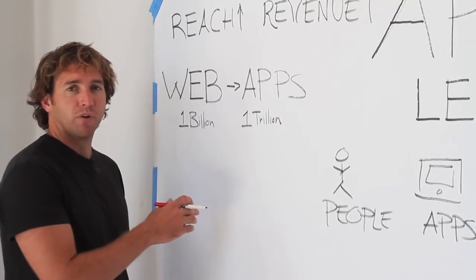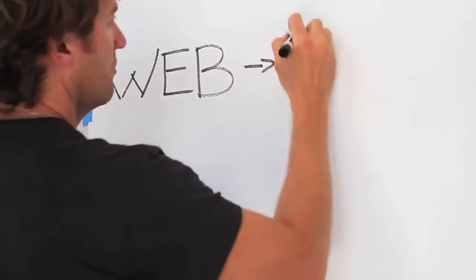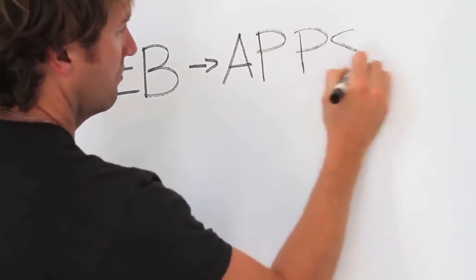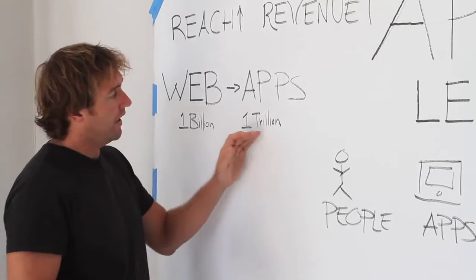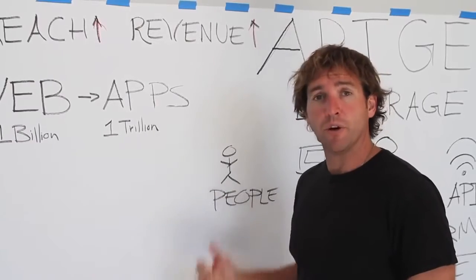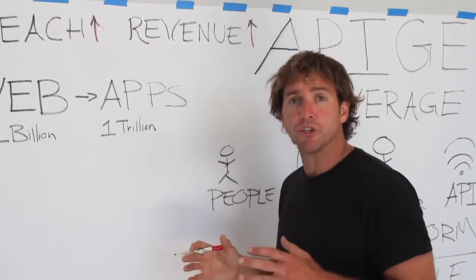There are two major transitions happening in the world today. The first is the transition from the world of the web to the world of apps. Over the past decade, we put one billion web browsers into the marketplace. Today, we're projecting a world of one trillion devices, each running dozens of apps. That means trillions of applications. This is an absolute explosion of consumption.